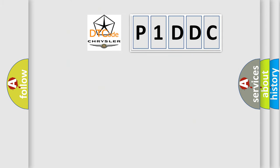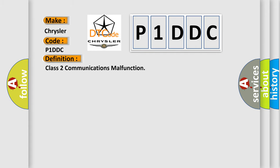So, what does the diagnostic trouble code P1DDC interpret specifically for Chrysler car manufacturers? The basic definition is Class 2 communications malfunction.